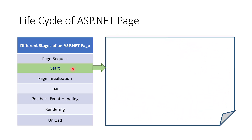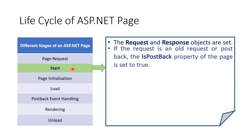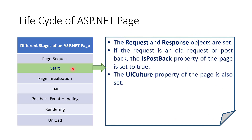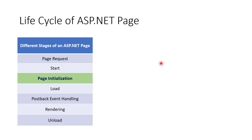The second stage is Start. In this stage, the request and response properties of the page are configured. The page also determines whether the request is new or old by using the IsPostBack property. The IsPostBack property is used to check whether a request for the page is a new one or an existing one. At this stage, the page's UICulture property is also configured.